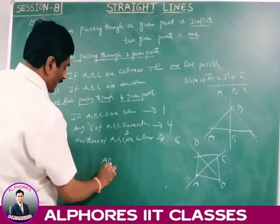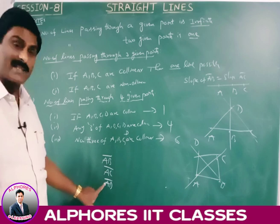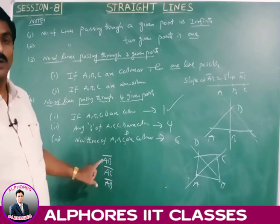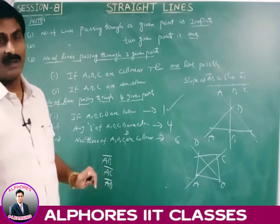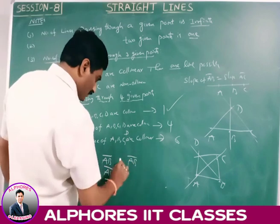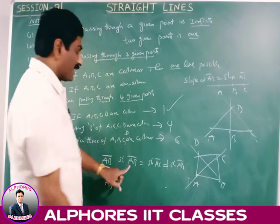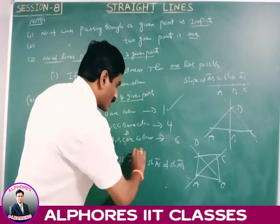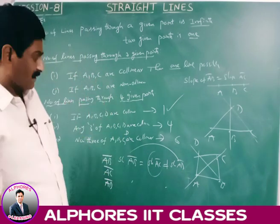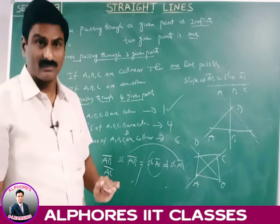To check: if slope AB = slope AC = slope AD, then A, B, C, D are collinear. If slope AB = slope AC ≠ slope AD, then A, B, C are collinear and D is separate. Similarly for other combinations. If slope AB ≠ slope AC ≠ slope AD (all different), then no three of them are collinear.